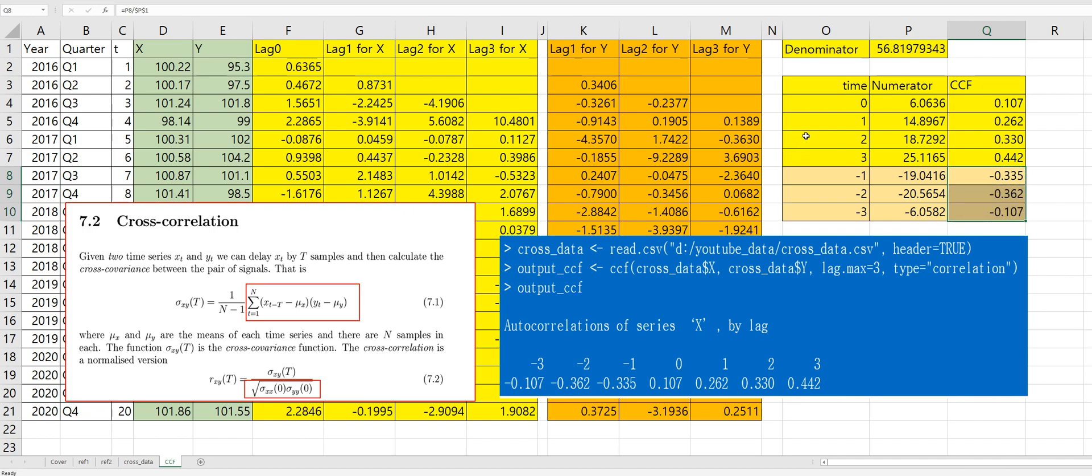Cool. Right, as you can see we were able to calculate cross-correlation for positive lag and negative lag. So among all these cross-correlations, this one shows highest cross-correlation between X and Y. I hope it was useful to understand how to calculate cross-correlation in Excel. Please click like and subscribe if it was useful for you. Thank you.